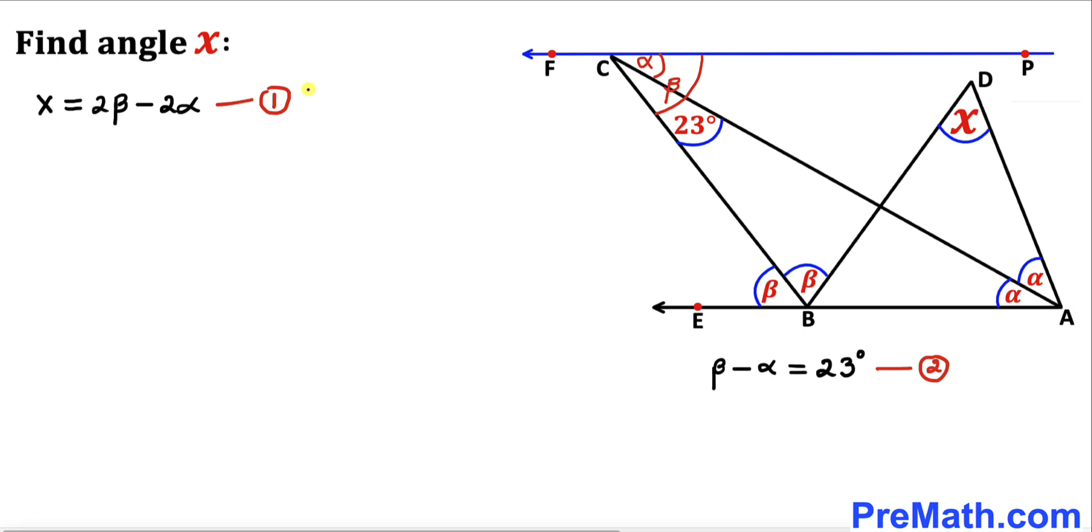Here's our final step. Let's focus on equation one once again. The right-hand side can be written as - I can factor out two - and this becomes beta minus alpha inside the parentheses. We know that beta minus alpha equals 23 degrees from equation two. Therefore, our x value is going to equal two times 23, so x turns out to be simply 46 degrees. Thus our angle x turns out to be 46 degrees.